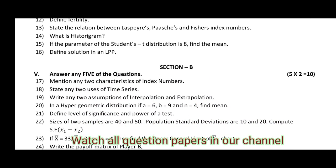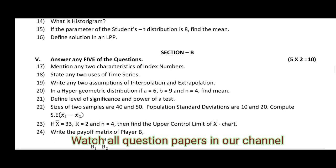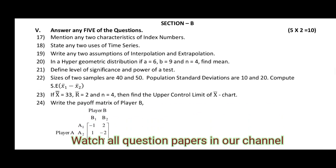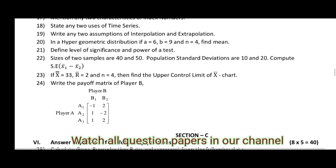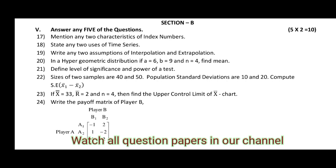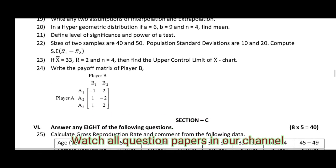In Section B, answer any 5 of the questions. Each question carries 2 marks. You have a choice — the total number of questions is 8, but you have to answer only 5.